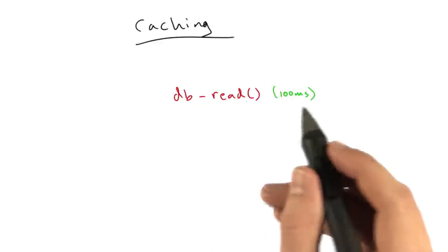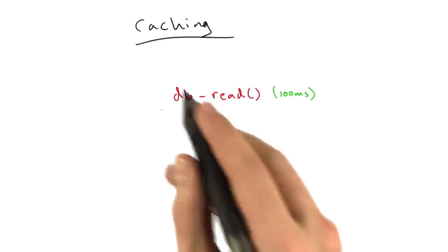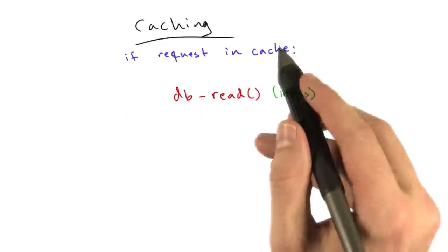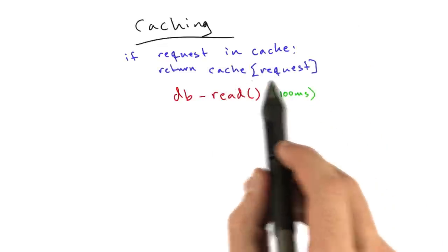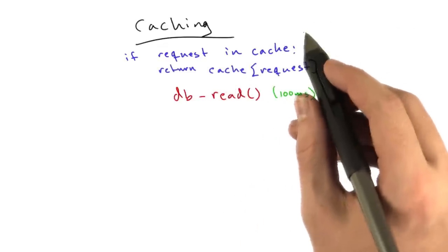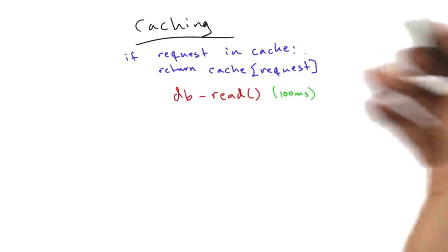So, if we wanted to cache this db_read, let's talk about what this algorithm would look like. If we were to write in pseudocode here, we would have something that looks like this. If the request we're making is in the cache, return the cache version of that request. And in this case, I'm pretending cache is like a dictionary, and the request that we're making is a key into this dictionary.